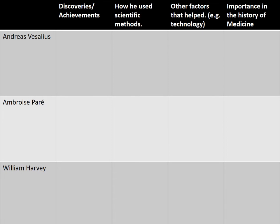You'll need a table with three sections, one for each of our significant individuals: Vesalius, Paré, and Harvey. The table needs columns for their discoveries and achievements, how they used scientific methods, other factors that helped them, and a judgment as to their importance in the history of medicine. Fill out that last column once you've considered all the other factors. Pause the video now to create your table.